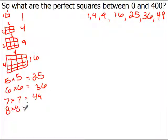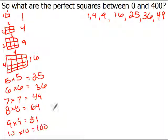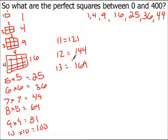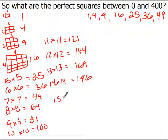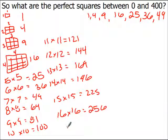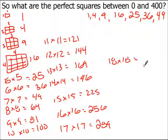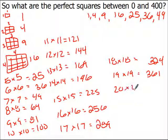And so on — we've got eights, nines, tens, elevens, twelves, thirteens. I'm just multiplying these together: eleven times eleven, twelve times twelve, thirteen times thirteen, and so on. We're going to keep doing this all the way up to 400. Fourteen times fourteen is 196. Fifteen times fifteen is 225. Sixteen times sixteen is 256. Seventeen times seventeen is 289. Eighteen times eighteen is 324. Nineteen times nineteen is 361. And twenty times twenty is 400.